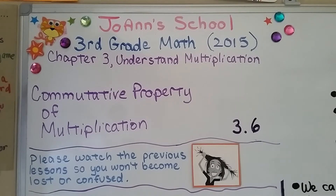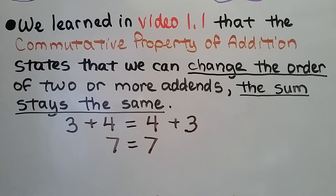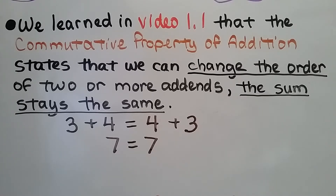Lesson 3.6: The Commutative Property of Multiplication. We learned in video 1.1 that the commutative property of addition states that we can change the order of two or more addends and the sum stays the same. 3 plus 4 is equal to 4 plus 3. 7 is equal to 7. So that was the commutative property of addition.